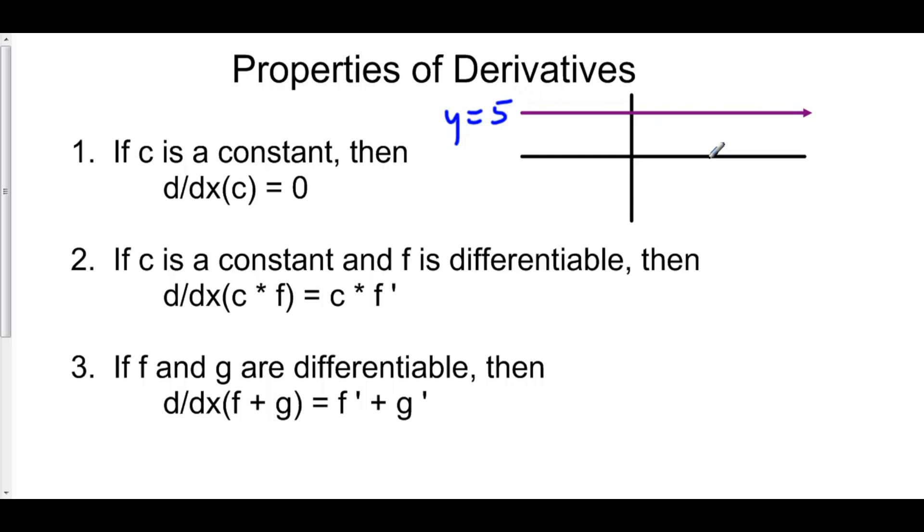Remember that the derivative is defined as the slope of the function at any point. What is the slope of any horizontal line? The answer is zero. Always. At any point on this horizontal line, the slope is going to be zero.